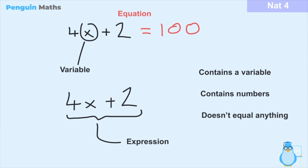The three main characteristics of an expression are: number one, they contain a variable — in this case x; number two, they contain numbers — here there's a four before the x, meaning four times x, and a plus two; and number three, it doesn't equal anything. If we added an equal sign, that would transform this expression into an equation. So an expression is just something that stands by itself and doesn't equal anything.